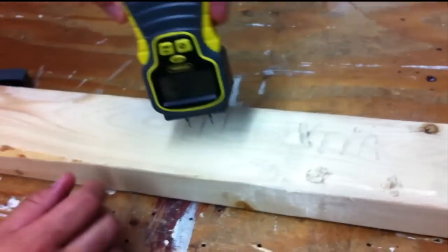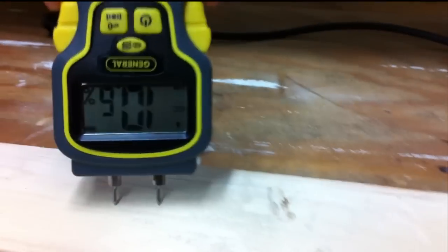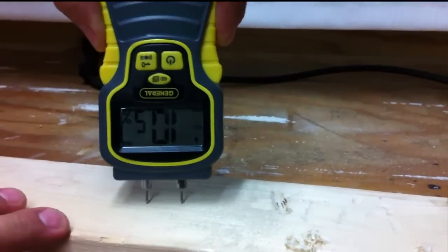Okay, so this is the dry end. What we're going to do is test the dry end. Why is your hand so moisturized? Shut up. Okay, so this is the dry end, and we're getting about 10.6% moisture.